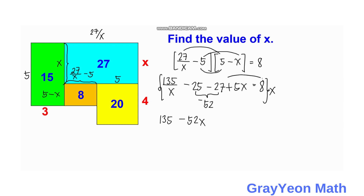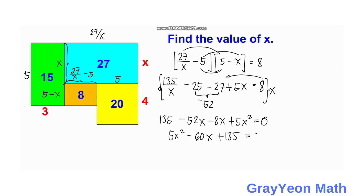After multiplying through by x and simplifying, we get: 5x squared minus 60x plus 135 is equal to 0.